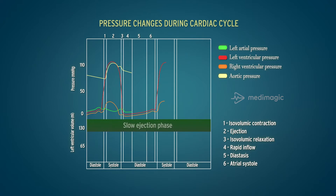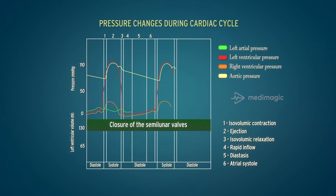During the slow ejection phase, the intraventricular pressure reduces rapidly, reaching a lower reading than the pressure in the aorta and the pulmonary artery. This pressure change leads to closure of the semilunar valves.